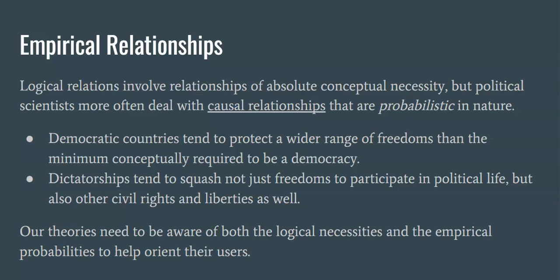For example, democratic countries tend to protect a wider range of freedoms than the minimum conceptually required in order to be a democracy. So democracies, although they don't necessarily have to grant you a lot of freedoms, typically do. We can think of democratic systems that don't offer a lot of freedoms — these are sort of non-liberal democracies — but for the most part, most democracies end up doing so. Similarly, dictatorships tend not to just suppress the freedoms to participate in political life, but they also tend to suppress a whole bunch of other civil rights and liberties as well, even though they don't really have to. This has to do with the tendencies we observe in the world, not with any kind of logical necessity. Our theories need to be aware of both the logical necessities and the empirical probabilities — what's more likely than not.